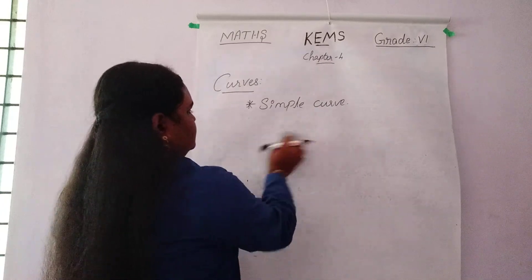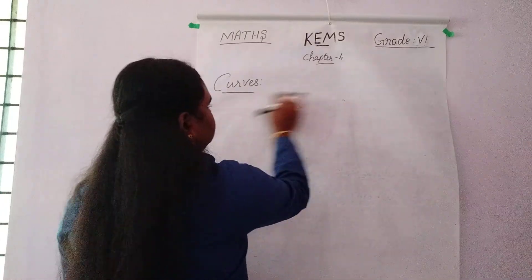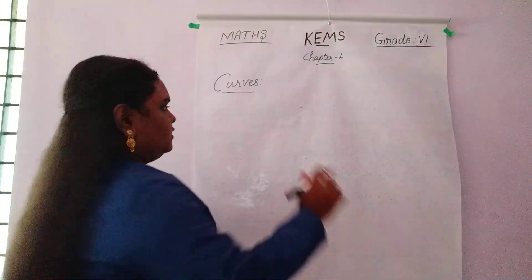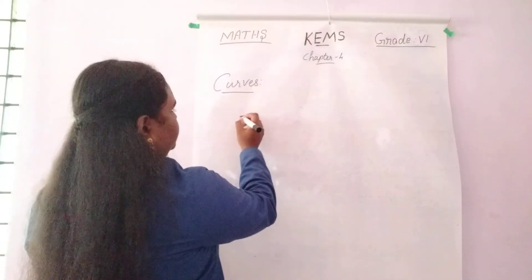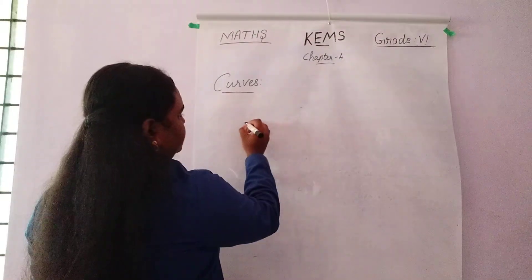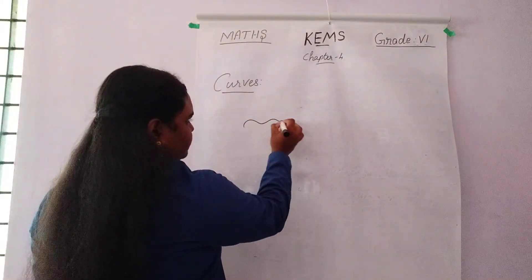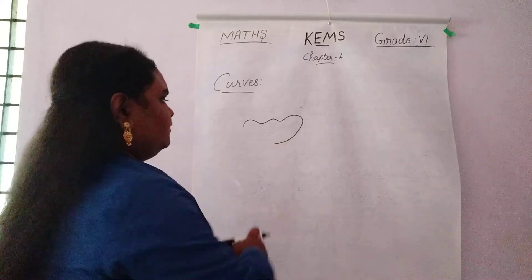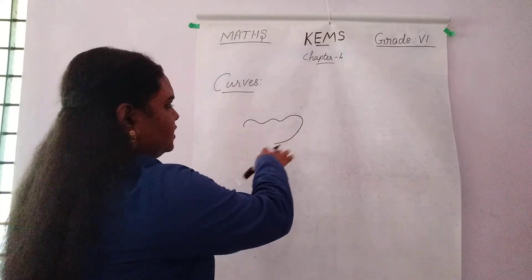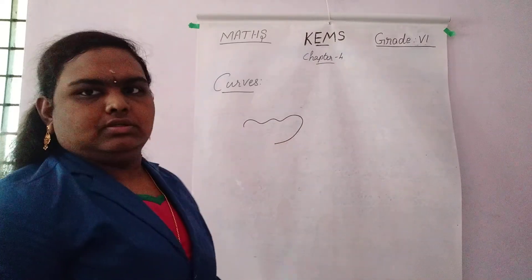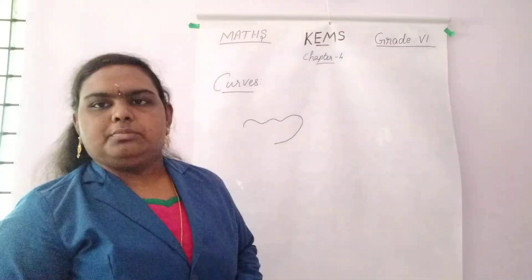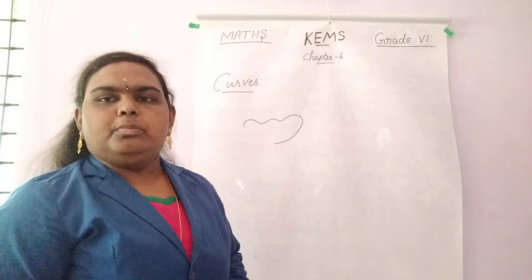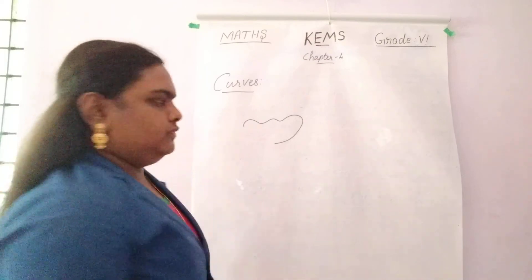Next one is the open curve. An open curve is nothing but if you draw a picture it will not be closed. That is known as the open curve.